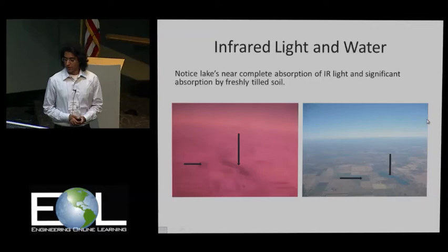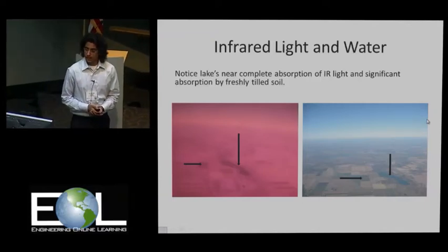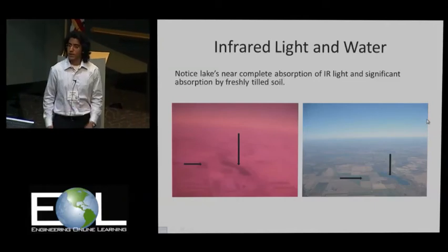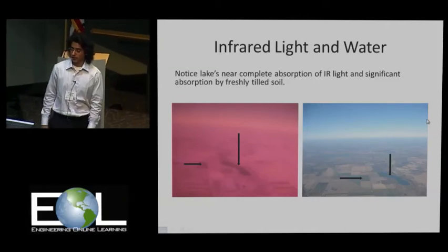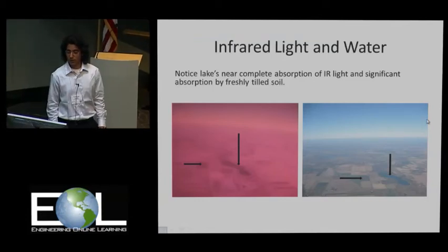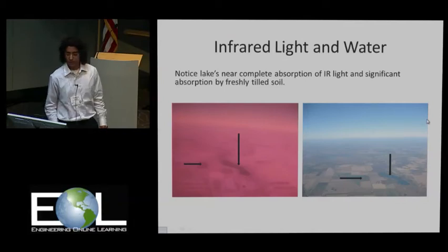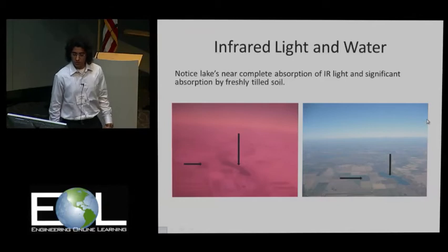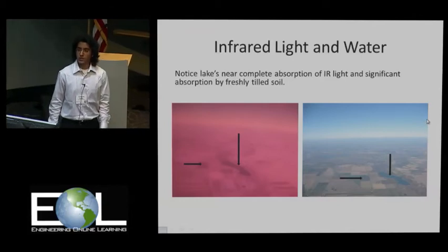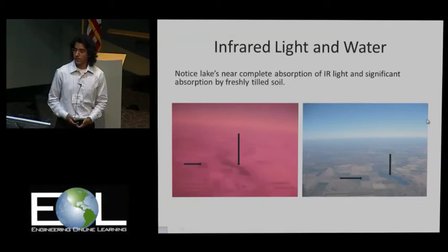We compared all our infrared and visible light photos and tried to get ones that are synchronized together. In these photos is a lake, pointed out by a vertical arrow, and a freshly tilled soil field, pointed out by a horizontal arrow. As you can see in the infrared image, both give a very dark patch that is very prominent, which could be because the lake and the freshly tilled soil are absorbing a lot of infrared light.